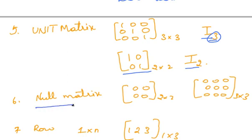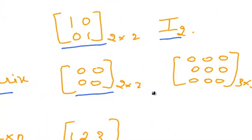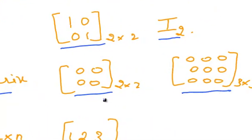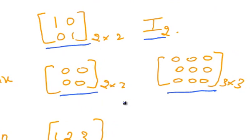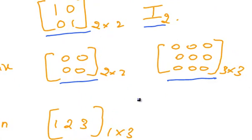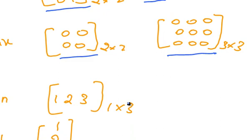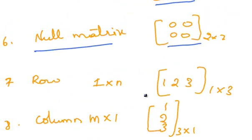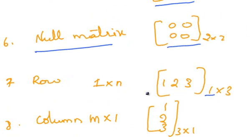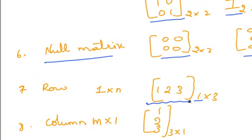Null matrix — a matrix in which all the elements are 0 is known as a null matrix. Row matrix — a matrix which consists of only one row is known as a row matrix. For example, 1, 2, 3 in one row. The basic order of the row matrix is 1 by N.